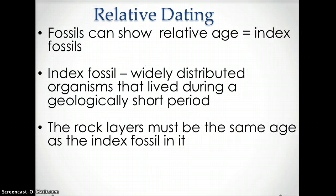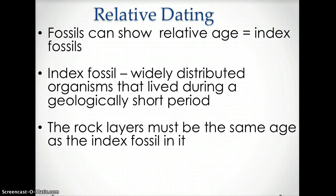Index fossils can help show the relative age of rock. An index fossil is a fossil of an organism that is widely distributed and only lived during a geologically short period of time. The rock layer that the index fossil is located in must be the same age as the index fossil. Also, fossils can help show when organisms appear in the fossil record and when they went extinct. If no fossils of an organism appear in the rock layers anymore, the last layer the fossil appeared in is the last time the species existed.